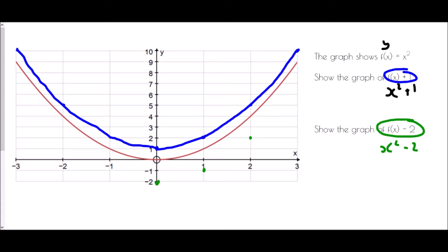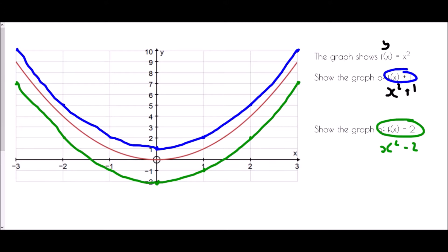And if x is 3, 3 squared is 9, take away 2 is 7. If we draw this curve in, we can see again we've got exactly the same shape, just a little bit further down. For the negative values: negative 1 squared is 1 take away 2 is negative 1; negative 2 squared is 4 take away 2 is 2; negative 3 squared is 9 take away 2 is 7. And all that has happened is the graph is a little bit further down.